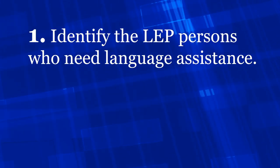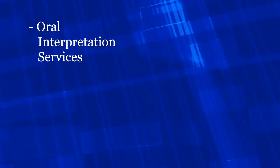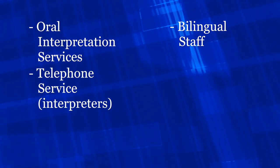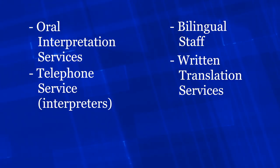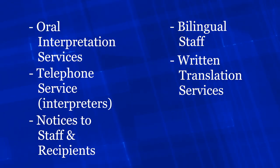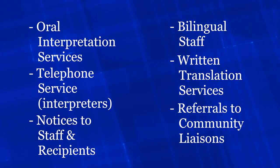First, identify the LEP persons who need language assistance and the specific type of language assistance that is needed. Language assistance may include, but is not limited to, oral interpretation services, bilingual staff, telephone service lines and interpreters, written translation services, notices to staff and recipients of the availability of LEP services, or referrals to community liaisons that are proficient in the language of the LEP person. It may even include a family member as an interpreter, although HUD doesn't recommend this source.